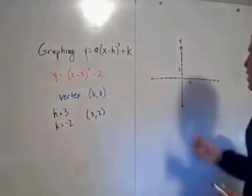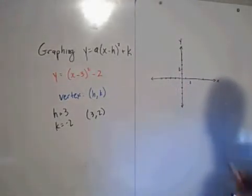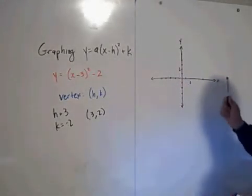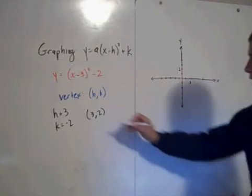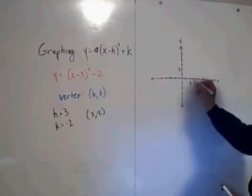So we come over to our axes. We have x-axis, y-axis with our scale included, and then plot the point 3, negative 2. Here's our vertex.